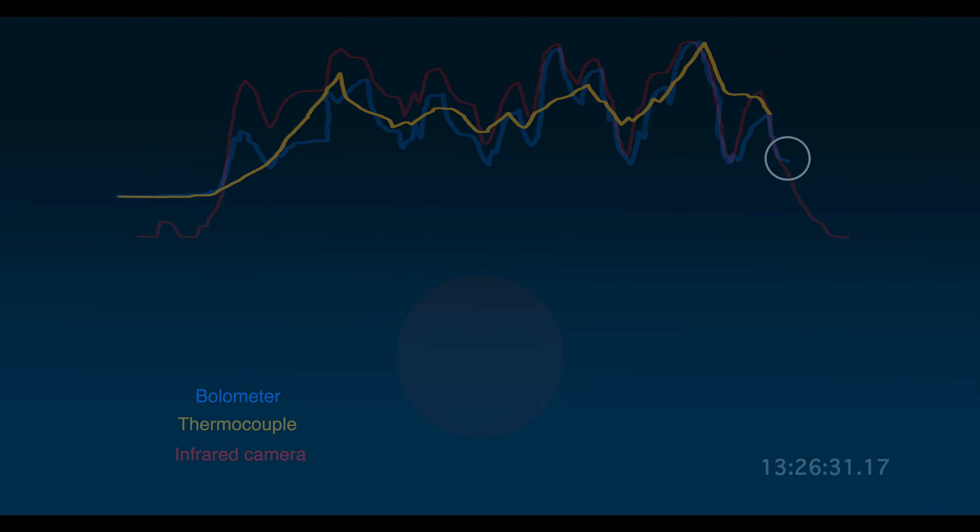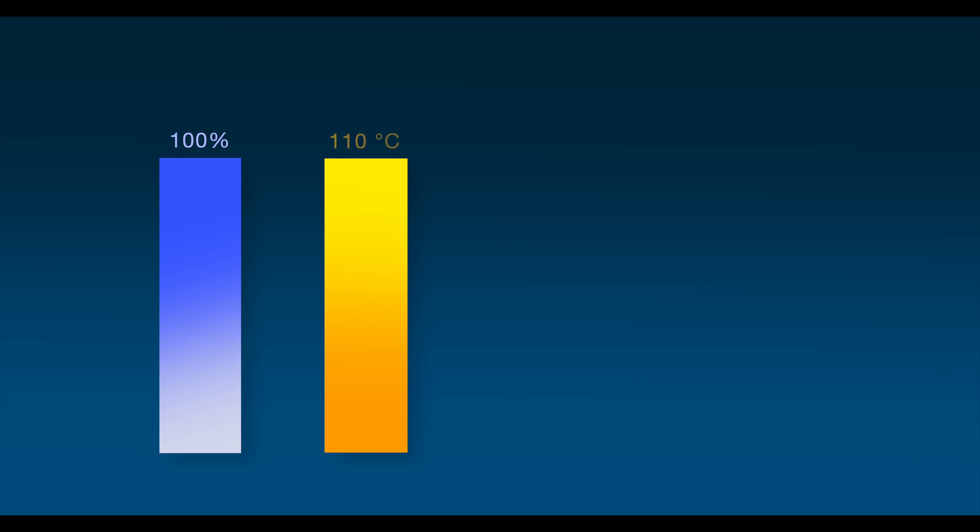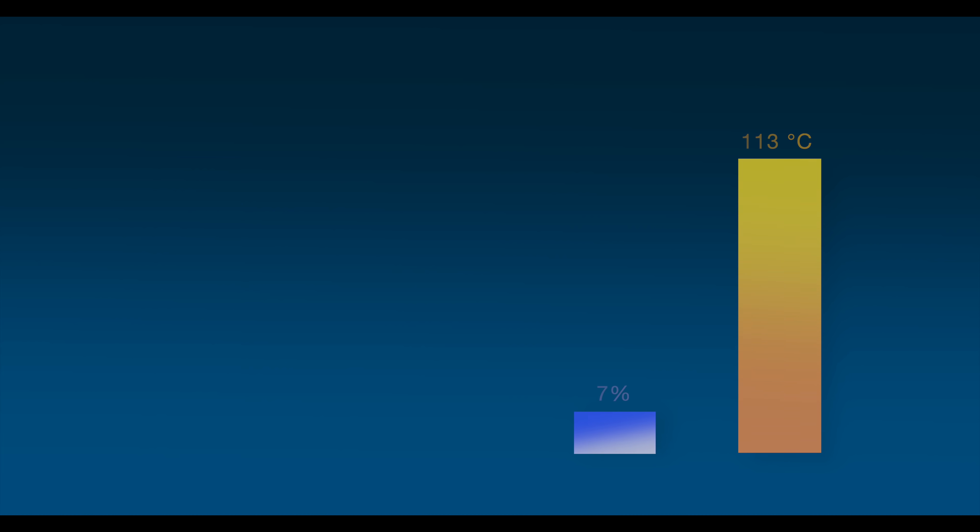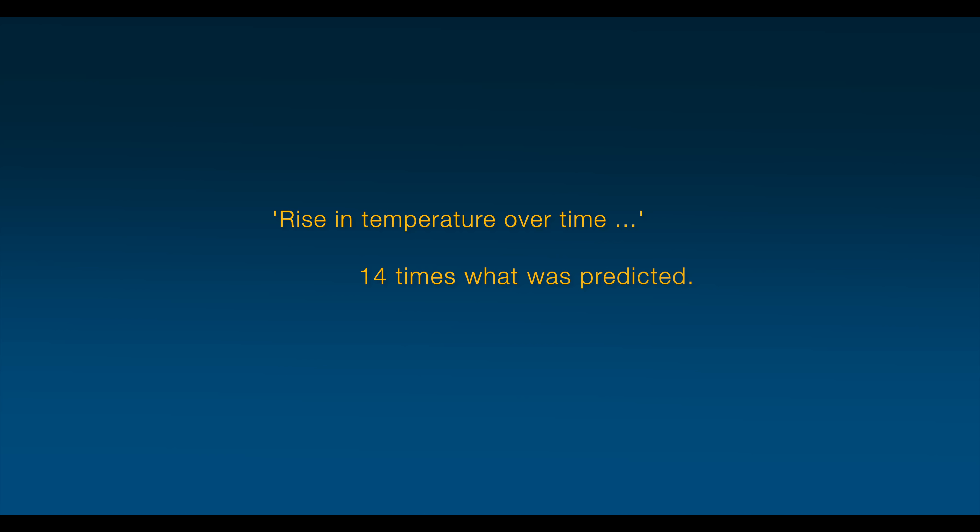Three separate analyses had been done by experts in computational fluid dynamics. All three predicted that with 100% input power, we would reach the thermal limit of the chamber. And for three years, these predictions had been accurate. But with our new adjustments, and using only 7% input power, we very quickly reached the thermal limit. It was the elemental transmutations that were responsible for the rise in temperature over time that was almost 14 times what was predicted.